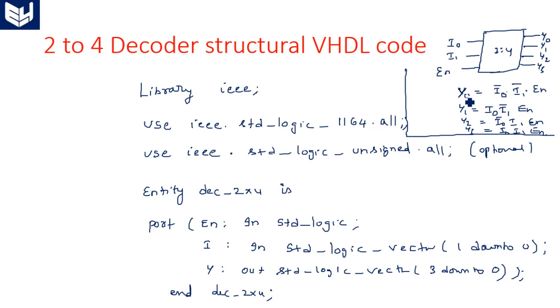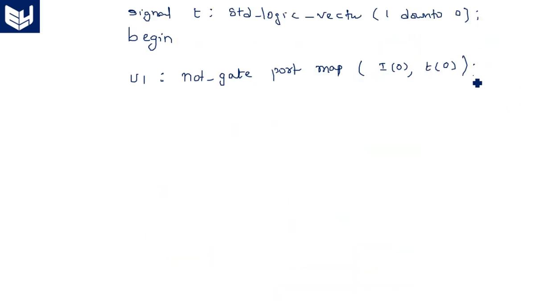I will tell you the purpose of this. When you are writing Y out expressions Y0, Y1, Y2, Y3, in the first expression Y0, I is available as I0 bar, I1 bar and input is available in the second case as I0 and I1 bar. Sometimes it is in the complemented form and sometimes in the true form. The complemented versions, we are taking as T. That is of user interest, you can define any variable. Here I am taking T. T defines the complemented version. That is why here I0, the meaning of this line is T of 0 is equal to I of 0 bar, that means I0 bar. And similarly, U2 is equal to NOT gate port map of I1, T1. NOT gate part is completed.